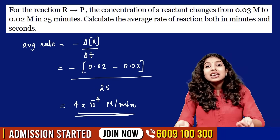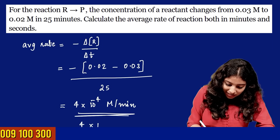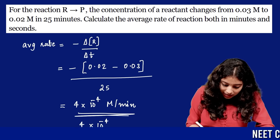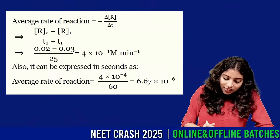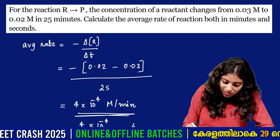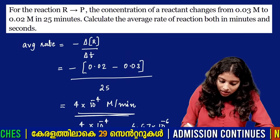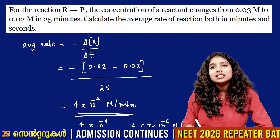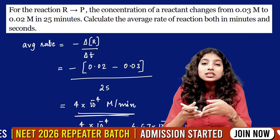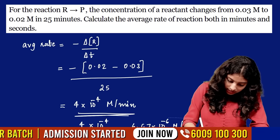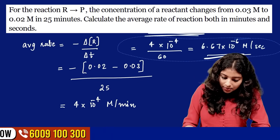Now we need the rate in seconds as well. Taking 4 × 10⁻⁴ per minute and converting: 0.02 divided by the time in seconds gives us 6.67 × 10⁻⁶ molar per second.